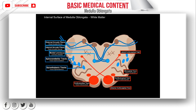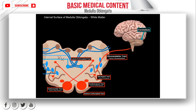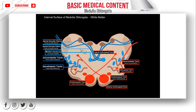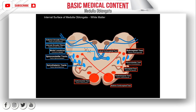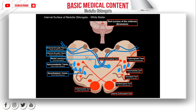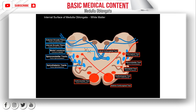Next we have the olivospinal tract, which comes from the olivary nuclei and also helps keep your balance and posture. Through the olivary nuclei, there are also fibers that go into the cerebellum called the olivocerebellar tract, which aids in your balance system. Next we have the rubrospinal tract. Rubro means red, named because it originates from the red nuclei located inside the midbrain. These fibers are extrapyramidal, not originating from the primary motor cortex. They descend as the rubrospinal tract, responsible for fine coordination of movements and supporting voluntary movements — making your movements more precise.